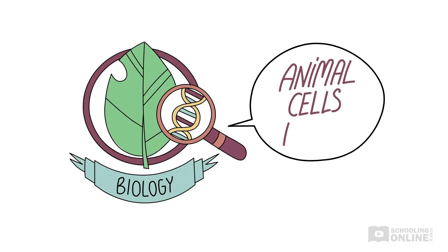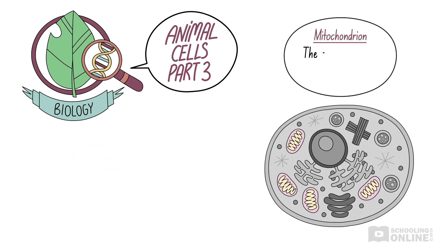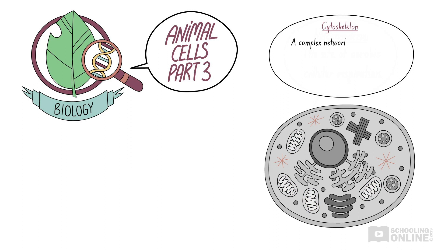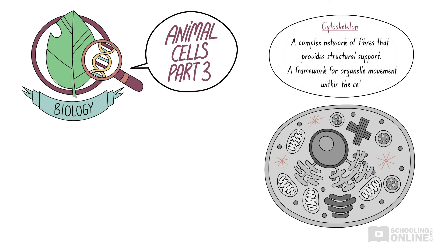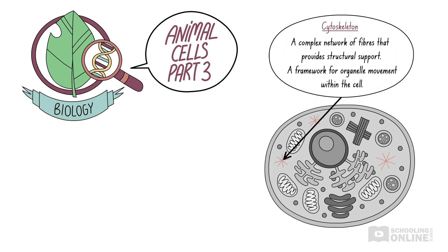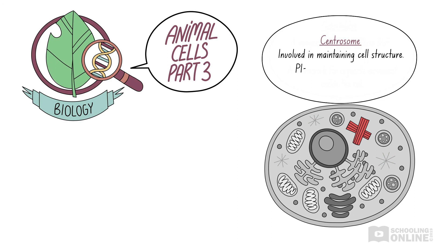Let's revise what we've covered in this lesson. The mitochondrion is an organelle that is the site of aerobic cellular respiration, so it produces energy for the cell. Mitochondria are surrounded by an outer and an inner membrane, which is folded into cristae, and each membrane consists of a phospholipid bilayer. The cytoskeleton is a complex network of protein fibres that supports the interior of an animal cell and keeps the organelles organised — most organelles are attached to it, so it provides a framework for their movement around the cytoplasm. The centrosome is an organelle involved in maintaining cell structure and plays a key role in mitosis, which is the process of cell division.